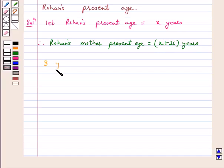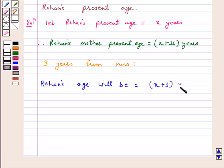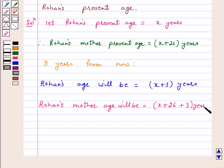So, 3 years from now, Rohan's age will be X plus 3 years. And Rohan's mother's age will be X plus 26 plus 3 years, which is equal to X plus 29 years.